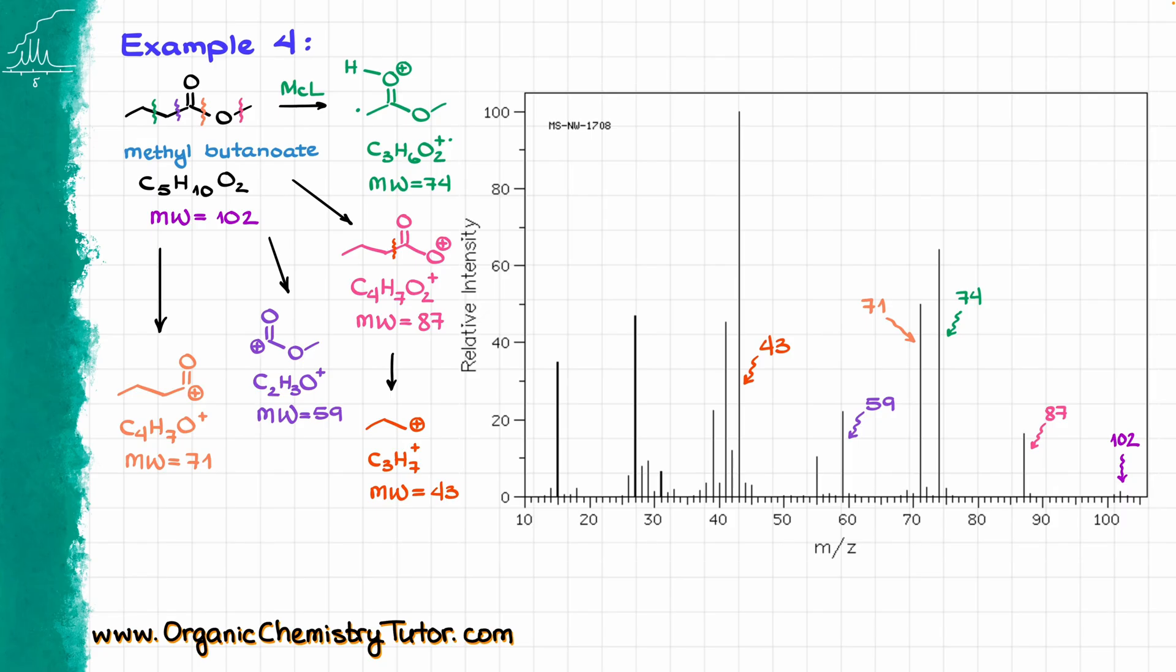And, of course, there are a few other unique type of rearrangements and fragmentations that we do occasionally see in mass spectrometry. We can see things like the retro-Diels-Alder reaction, we can see two carbon chunks flying off, aromatic compounds, and so on. And there is actually quite a few of those.